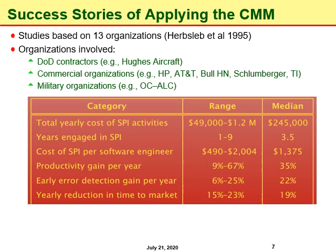Productivity gain per year was 9% to 67%, which is a huge gain in return for these process improvement efforts. Early error detection gain per year was 6% to 25%. Yearly reduction in time to market was 15% to 23%, with a median of around 19%. These numbers are very encouraging and reflect that investment in process management and improvement always pays dividends.